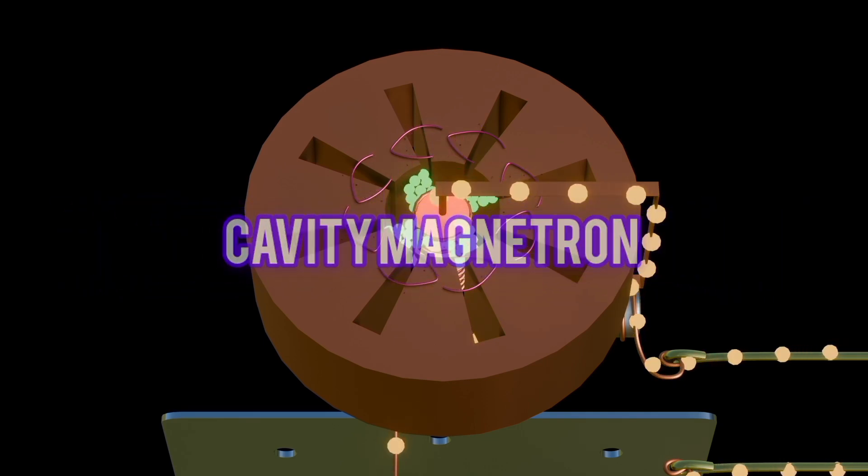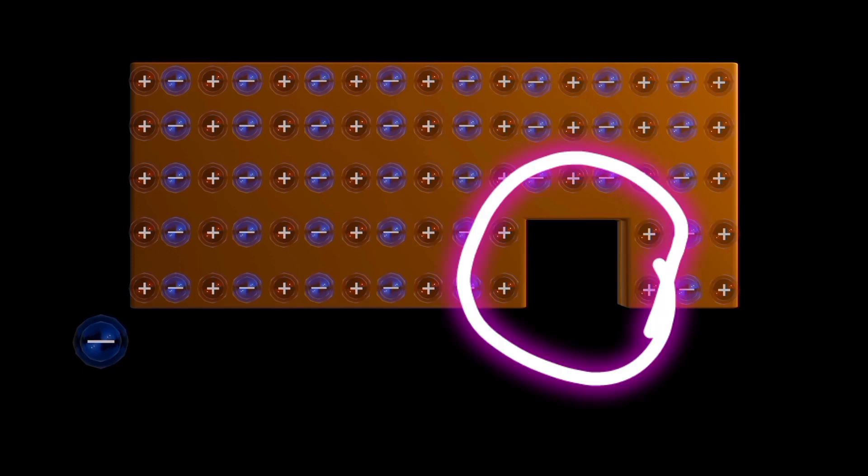To understand how this cavity magnetron is brought into place, we can now use the simplest model. We will analyze the metal bar with the cavity. The metal bar always consists of positive and negative charges. When an electron is accelerated across the bar, it will cause disturbances on the conductor bar.